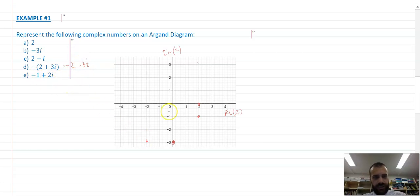And finally, negative one plus two i. All right, so very straightforward stuff.